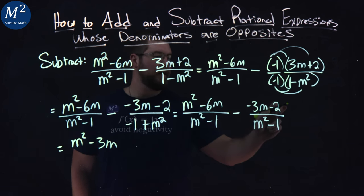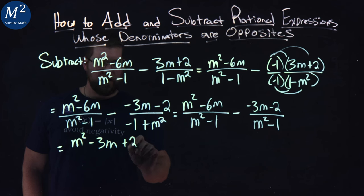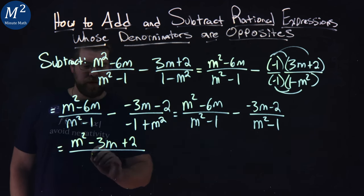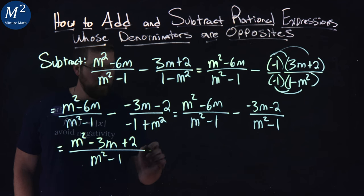Nothing over here, so we just have minus negative 2, which is plus 2. All over, the denominator being the same, just like in fractions, we just keep the denominator the same, m squared minus 1.